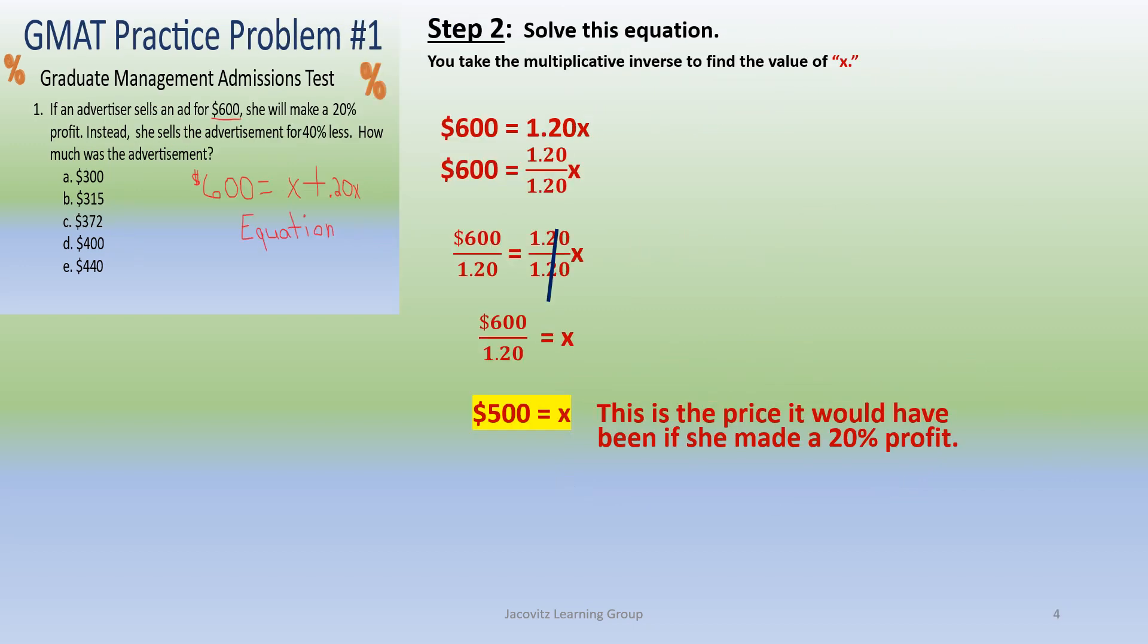Now you have $600 = 1.20x. You solve this as a regular equation, so you divide. You take the multiplicative inverse over to the other side. So when you divide 1.20 by 1.20 itself, you get 1, and this x is isolated by itself. And then when you divide 600 by 1.20, you get $500.